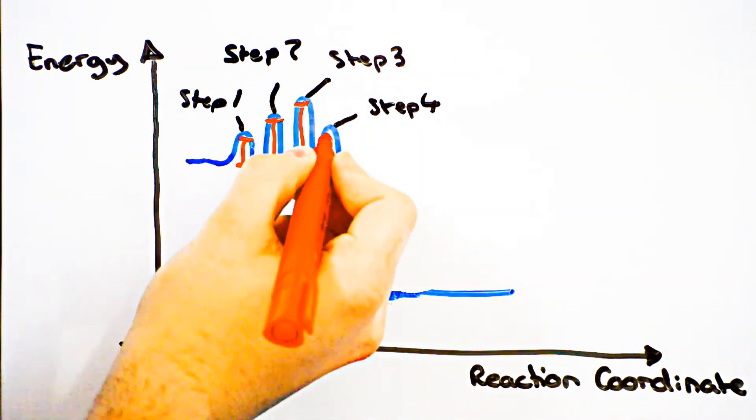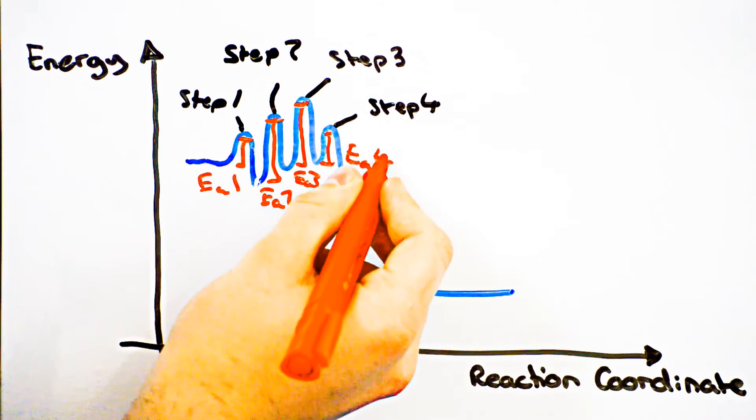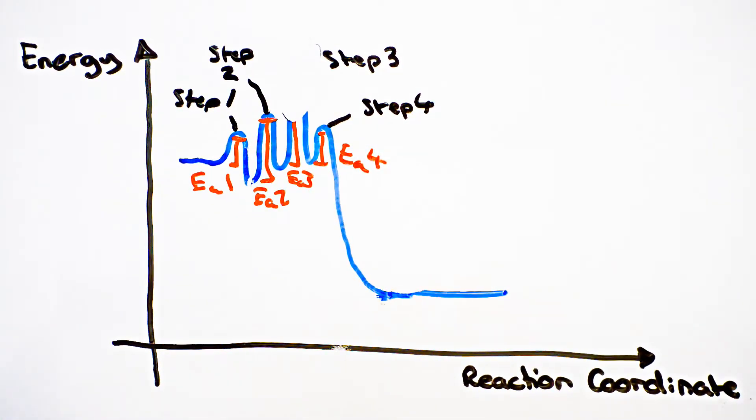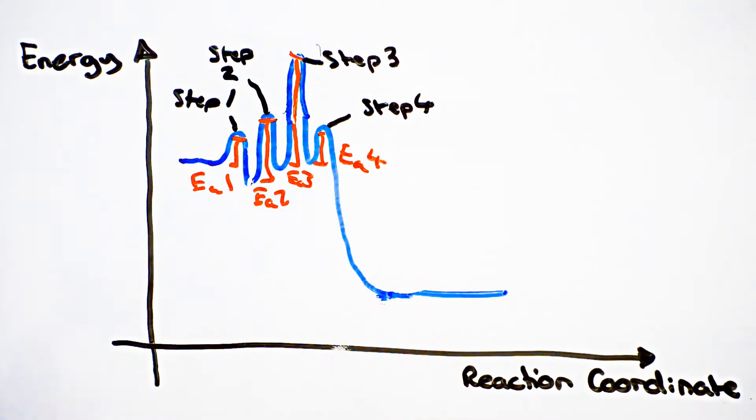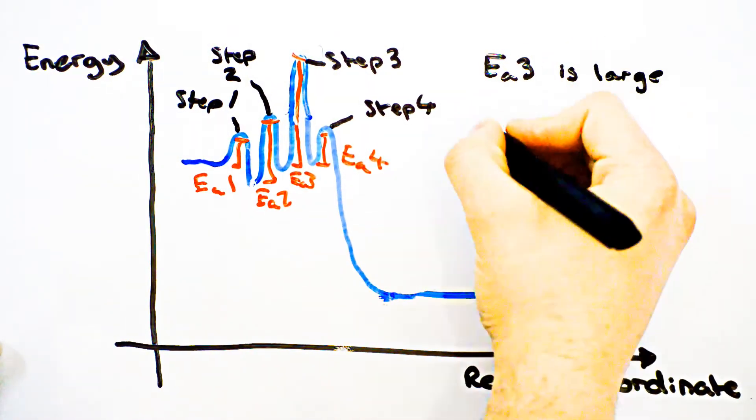Each step in the catalytic cycle has its own activation energy and rate of reaction. If one of the steps has an activation energy too high, this will hinder the overall reaction rate because of the large amount of energy required to overcome the barrier.